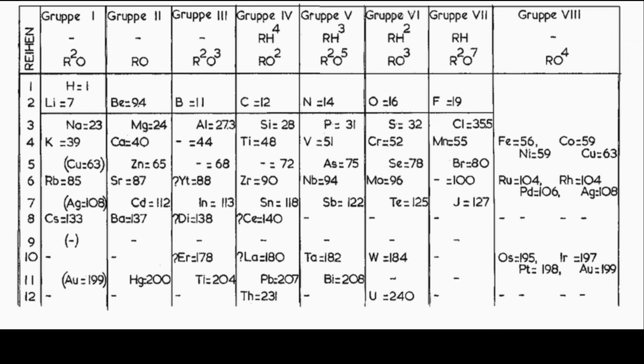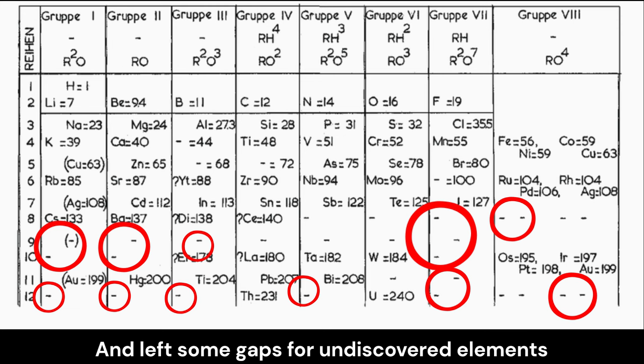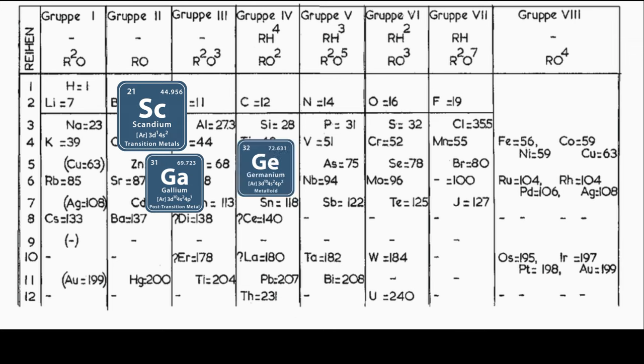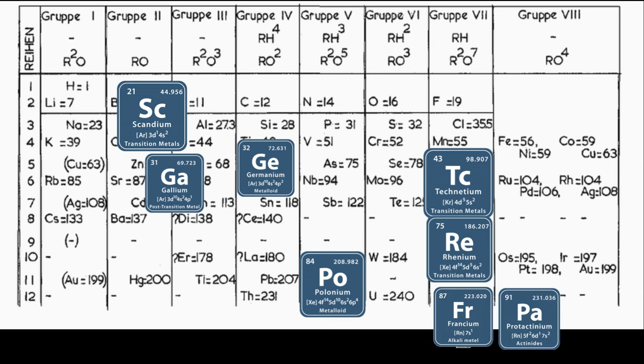Even with a rudimentary version of this table, he correctly pointed out that some elements' atomic weights were wrong. He refined it until 1871, and left some gaps for undiscovered elements, even predicting their properties, and about half of them turned out to be real, like scandium, gallium, germanium, technetium, rhenium, polonium, francium, and protactinium.